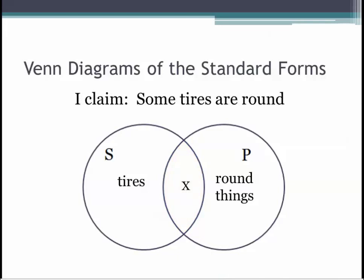The I proposition in this example is saying that at least one tire is round. It could be one or it could be that nearly all the tires are round. Some, in categorical logic, doesn't distinguish between how many members of the set there are, only that it doesn't apply to all or none and there is at least one. The quantity of an I claim is particular and the quality is affirmative. An X is used in the Venn diagram to indicate at least one. In the I claim, the X goes in the middle area, to indicate that there is at least one tire that is also a round thing.